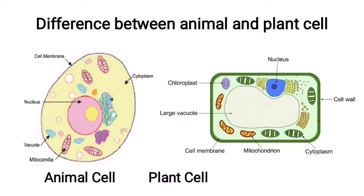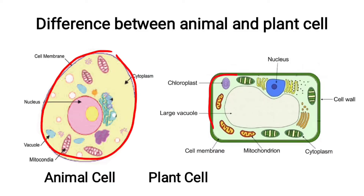Differences between plant and animal cells: animal cells are mostly round or irregular in shape, while plant cells are rectangular or square. Animal cells have only a cell membrane on the outside, while plant cells have both a cell wall and a cell membrane.